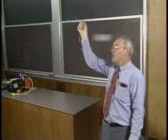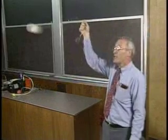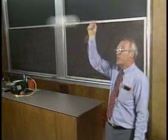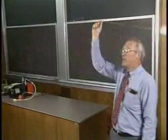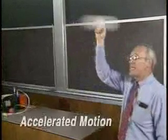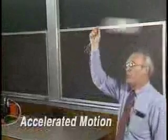Well, uniform motion has to be constant speed, but it also has to be in a straight line. And since this thing is going in a circle, that's an accelerated motion.